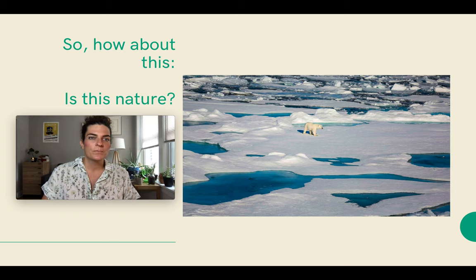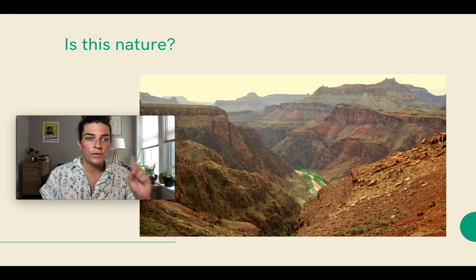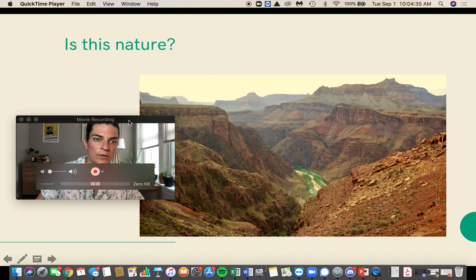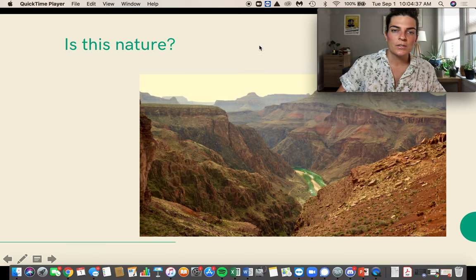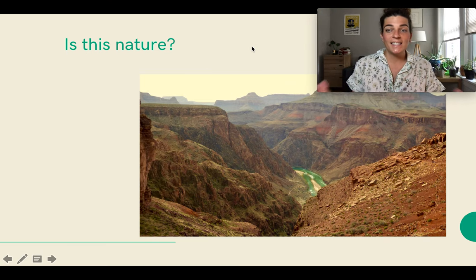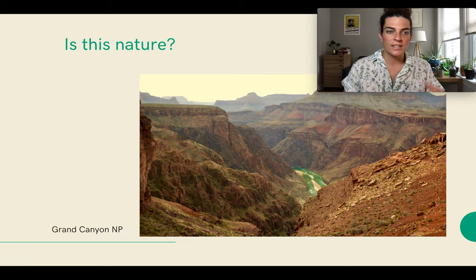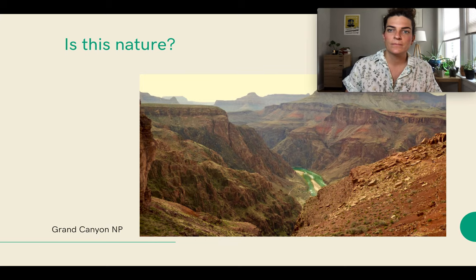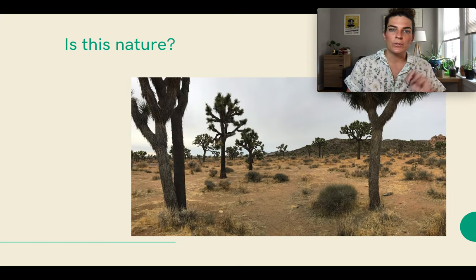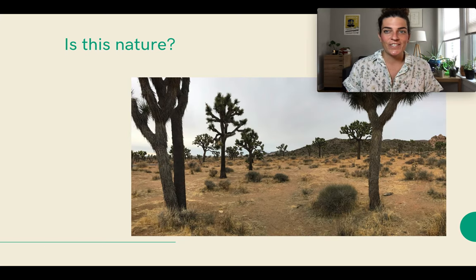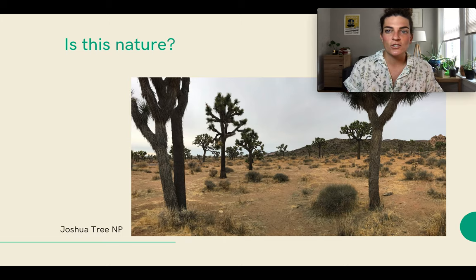Okay, so here's the game. Is this nature? The first photo — this is the Grand Canyon National Park. Number two — is this nature? And of course, this is Joshua Tree National Park. Also, the tornado siren decided to go off right now. I apologize for that, but I'm already into this lecture so I'm not going to start it over. It'll end in a second.